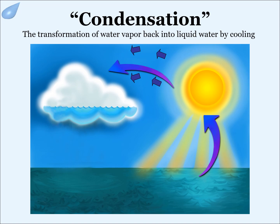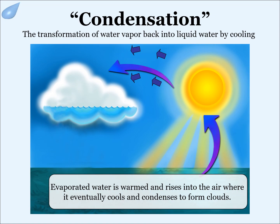The water seen on the outside of a cold glass on a hot day is condensation. Condensation is the transformation of water vapor back into liquid water by cooling — the changing of water from a gaseous state back to a liquid state in the form of clouds. How is condensation related to weather? Condensation forms clouds, which can produce rain, hail, or snow. Evaporated water is warmed and rises into the air; when it eventually cools, it condenses to form clouds.